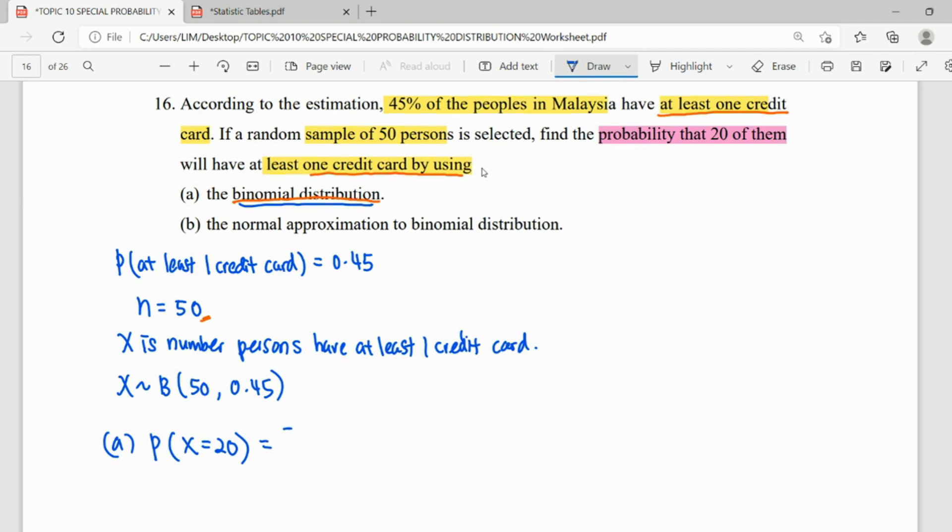So if we solve by binomial, for this equation we will use the formula, which is 50 choose 20, times 0.45 to the power 20, times 0.55 to the power 50 minus 20, which is 30. So this one, we just press calculator.